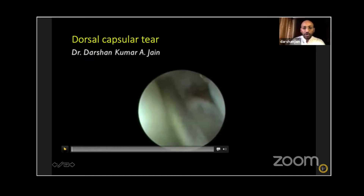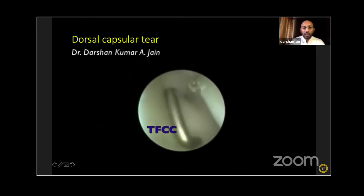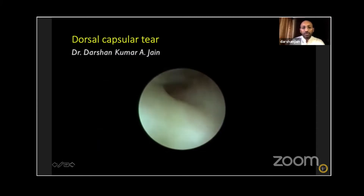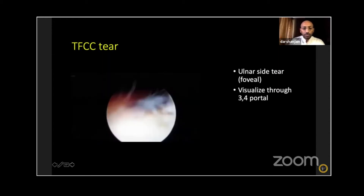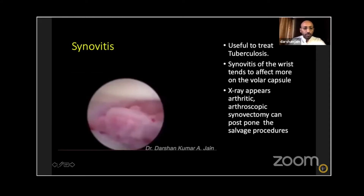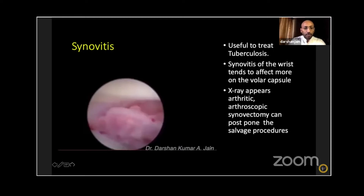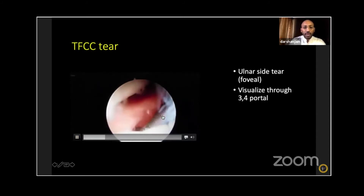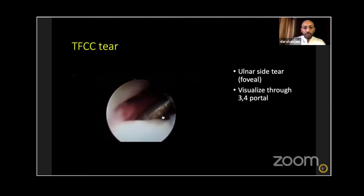There's another dorsal capsular tear visible here. You are viewing from the 3-4 portal and palpating from the 6R portal — that's the TFCC you're checking for the trampoline effect. This is a large tear on the dorsal capsule. On the foveal insertion side, you can see the tear on the ulnar side. This is a hook test demonstrating the TFCC, and you can easily do a lift-off on the ulnar side.